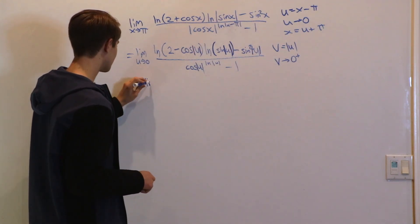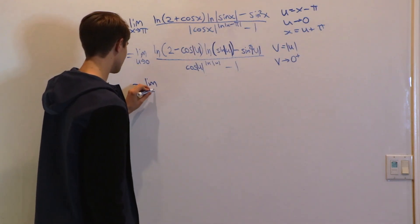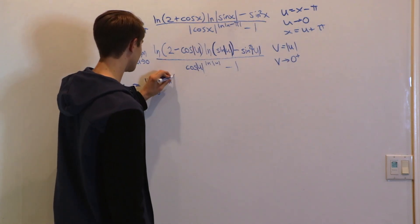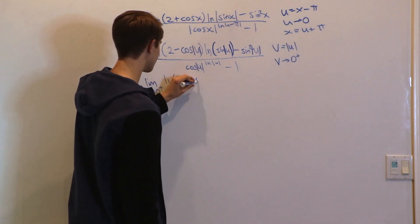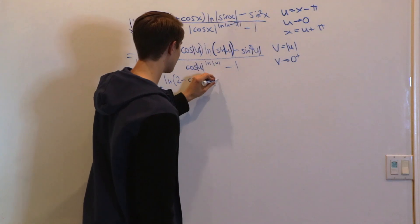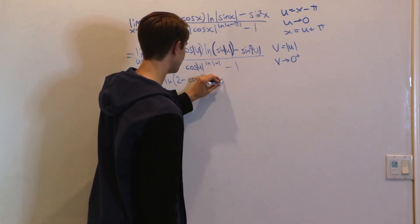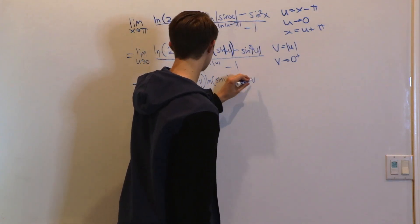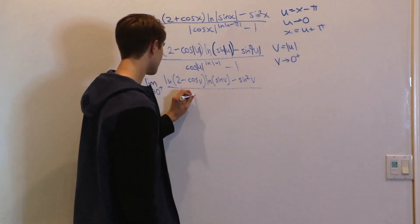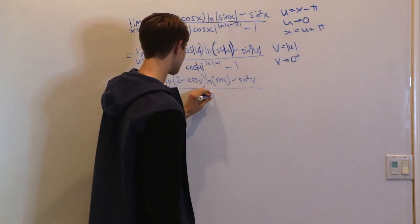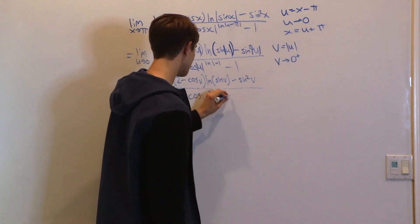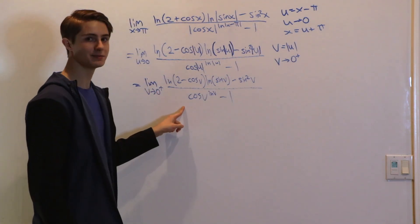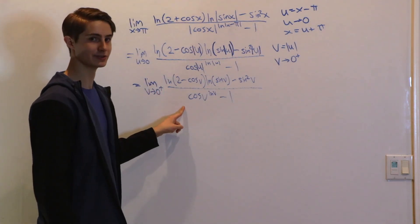Now let's turn our limit into terms of v, where v approaches 0 from the right. We have: natural log of (2 - cos v) times natural log of (sin v) minus sin²v, all over cos v to the natural log of v, minus 1. Now that our limit is in this form, it's time to break out the Taylor series.